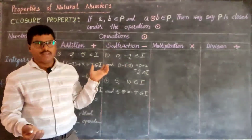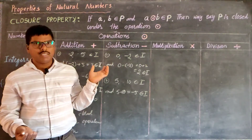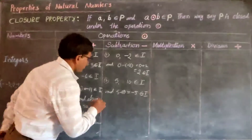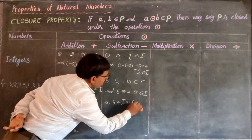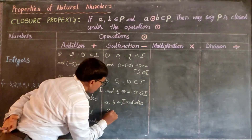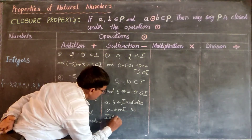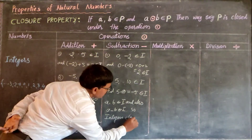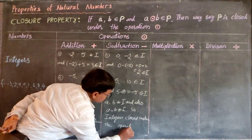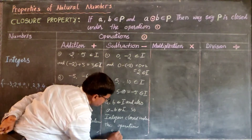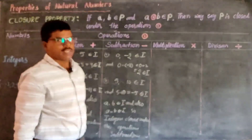From this we conclude that integers are closed under subtraction. So if a, b belong to integers, then a minus b also belongs to integers. Integers are closed under the operation subtraction.